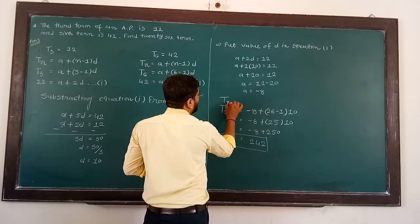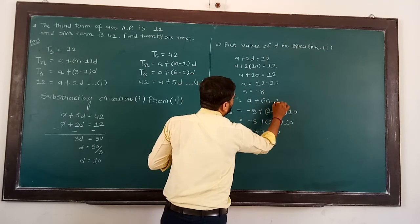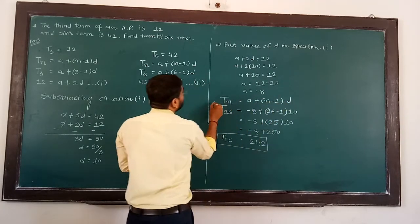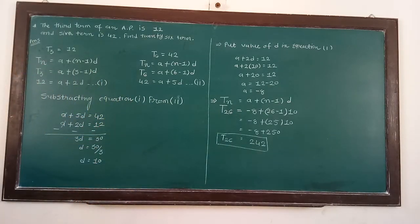So we write the formula: Tn is equal to A plus N minus 1, D. This is very much important for a big sum as a 5 marks for you. Thank you, thank you class.